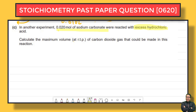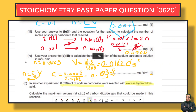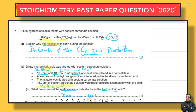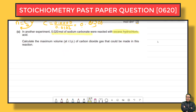We need to calculate the maximum volume of CO₂ at RTP. Looking at the equation: sodium carbonate has a ratio of 1 mole to 1 mole of carbon dioxide — ratio is 1 to 1. For every 1 mole of Na₂CO₃, the reaction produces 1 mole of CO₂.